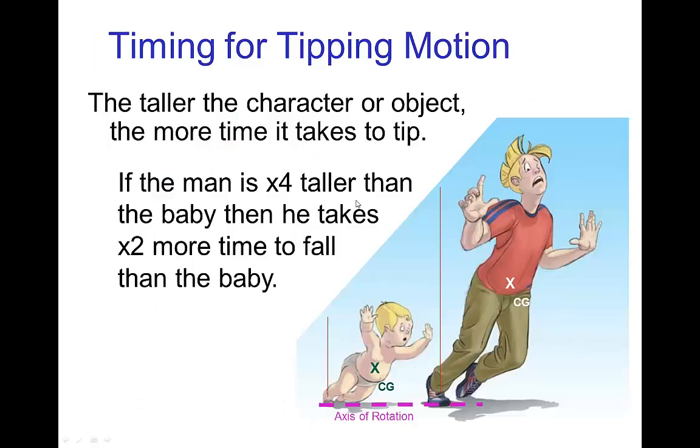To understand the timing of tipping motion, you have to remember that the taller an object is, the more time in terms of the number of frames it's going to take for that object to tip over. So if we start the man and the baby at the same angle and they are tipping over, if the man is four times taller than the baby, then the man takes twice as much time, twice as many frames, before he hits the ground.